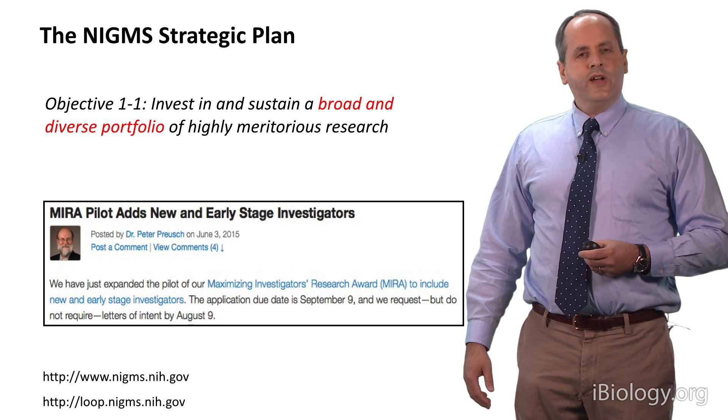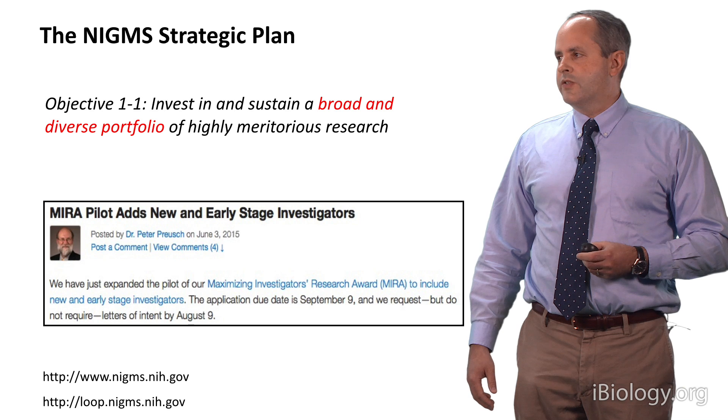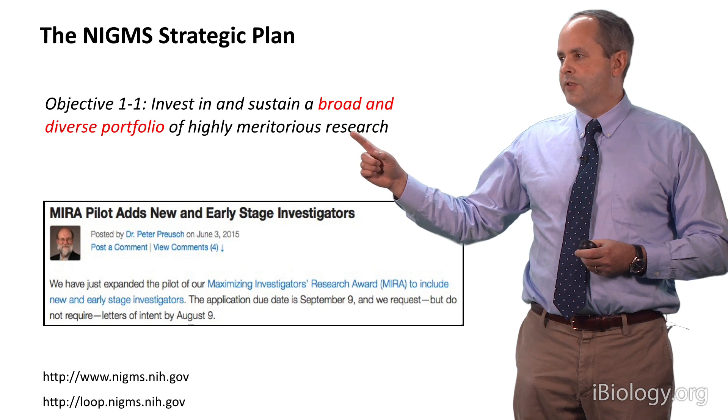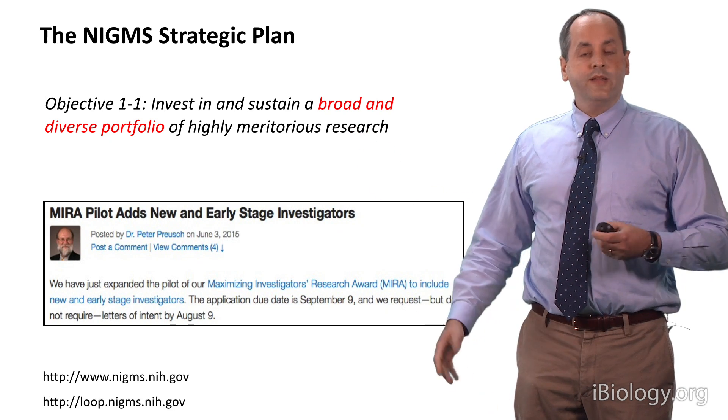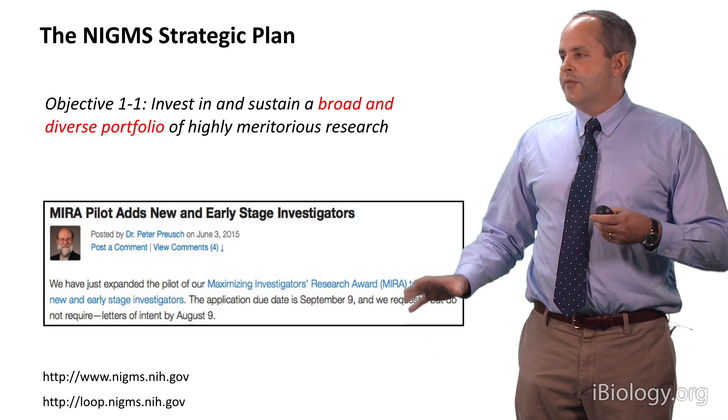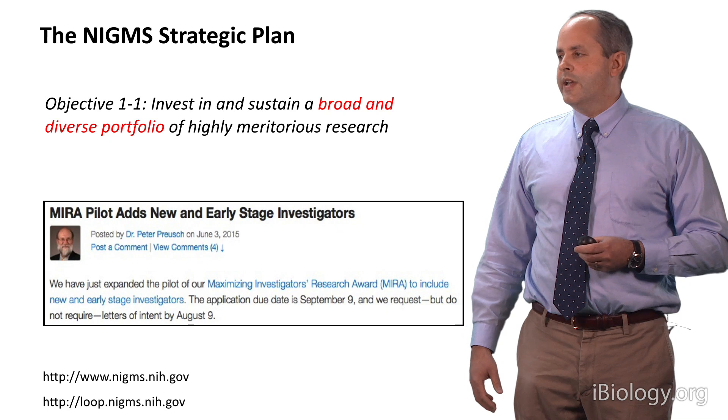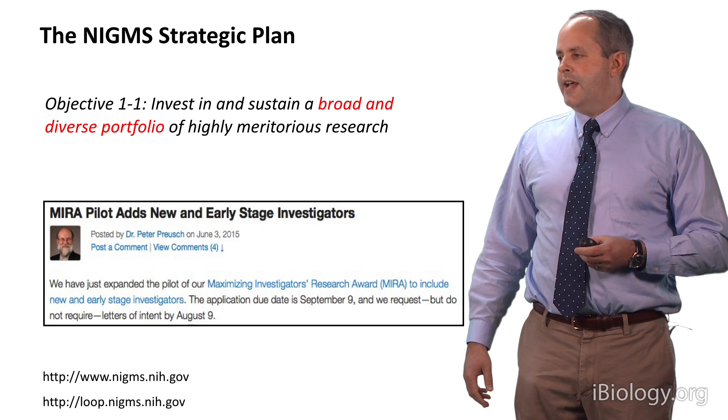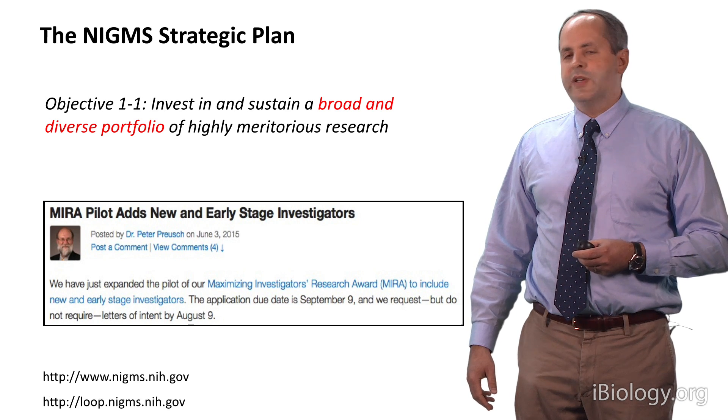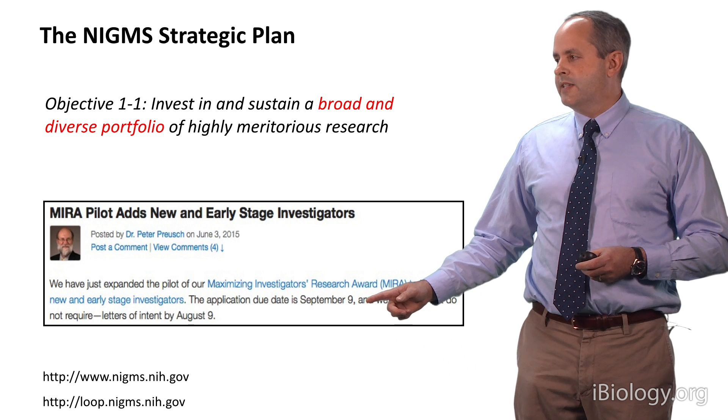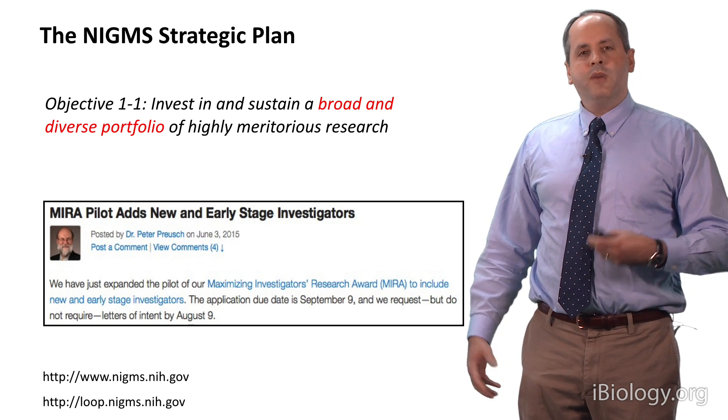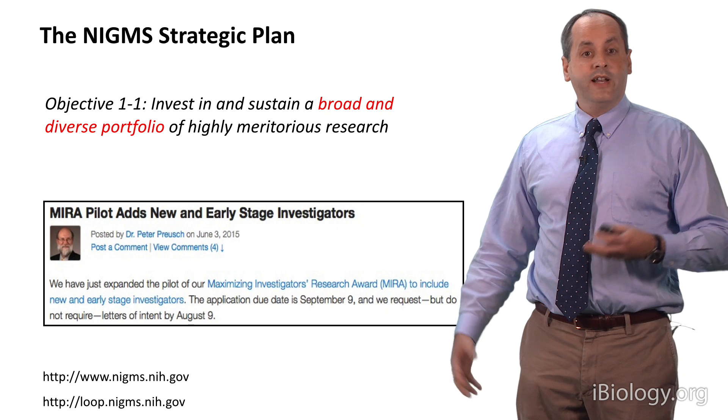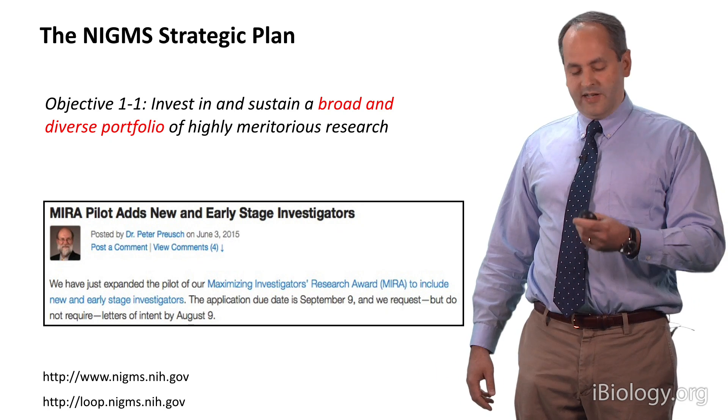At NIGMS, we are trying to do this in a number of different ways. We just released our strategic plan for the next five years. The very first objective is to invest in and sustain a broad and diverse research portfolio of highly meritorious work. We have a variety of different ways of trying to get to that. One of which is to test a new grant funding mechanism in which we will give a single grant per PI. It's called Maximizing Investigator's Research Award, or MIRA. Among the many positive outcomes we hope that MIRA will have will be to allow us to support a more broad and more diverse research portfolio for all the reasons I just explained.